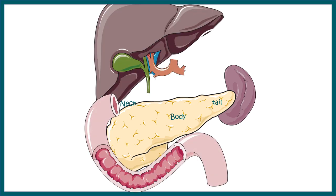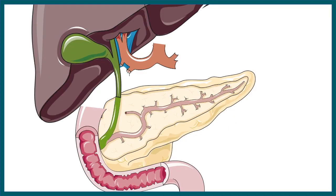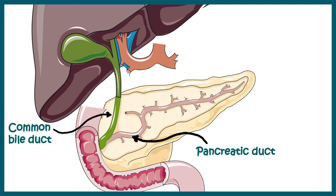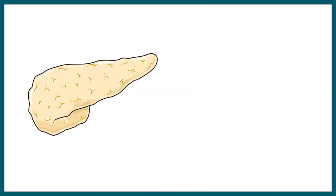Just above the pancreas there would be the liver, gallbladder, etc. Now let's look at the pancreatic structure. Inside the pancreas there are enzyme-filled regions known as acini, and from there the enzymes drain into a main outlet known as the pancreatic duct. This duct meets the common bile duct coming from the gallbladder and liver, and ultimately opens into the duodenum via the ampulla of Vater.